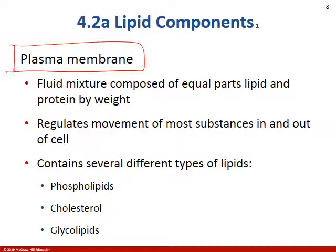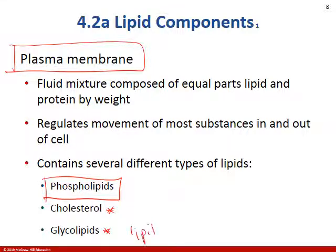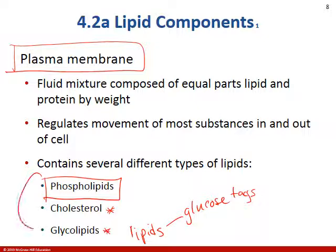We've mentioned plasma membrane several times and talked about the phospholipid bilayer. But there are also two other types of lipids in the plasma membrane. One is cholesterol — it's kind of wedged into the plasma membrane. And then we have glycolipids — lipids that have glucose tags. Let's go ahead and look at the figure.